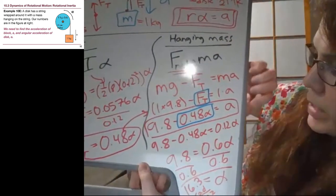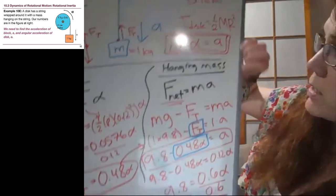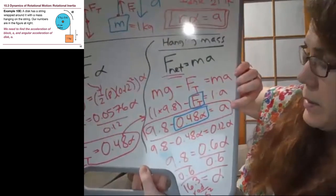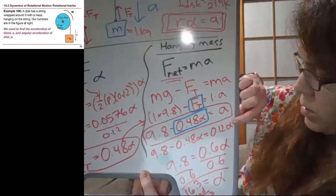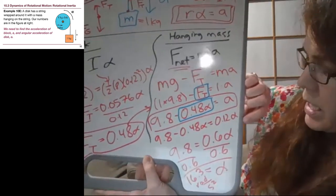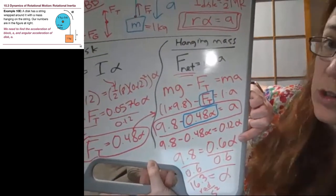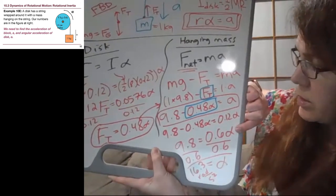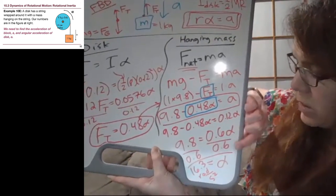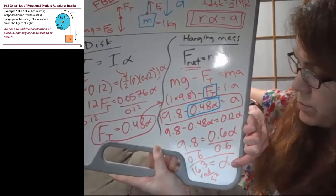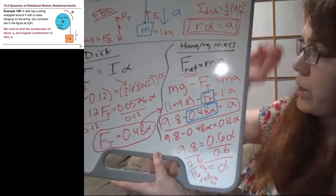so here's what we did. We have this equation that we plugged in R alpha equals A into, so R alpha on the right side. And then we solved for alpha by getting the two terms that had alpha on the same side. Then we divided by 0.6 to get the 16.3.